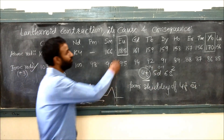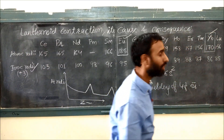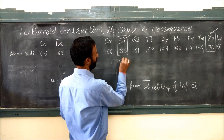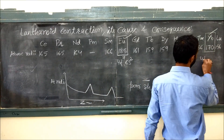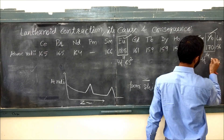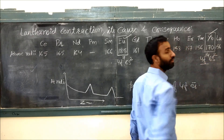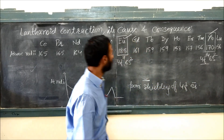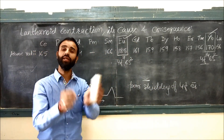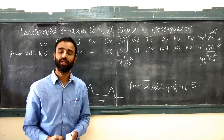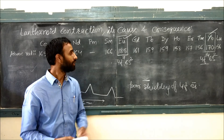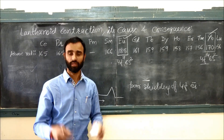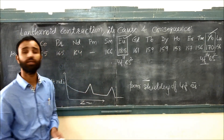Now, why is there a jump for europium and ytterbium? Because europium has exactly a half-filled 4F configuration, and ytterbium has a fully filled 4F configuration. Because of half-filled and fully filled electronic configurations, the electrons are less willing to participate in metallic inter-metallic bonding. That's why their size is larger for europium and ytterbium.